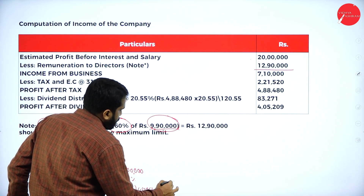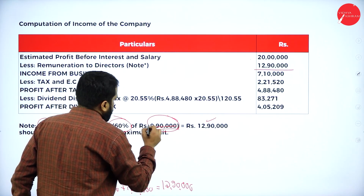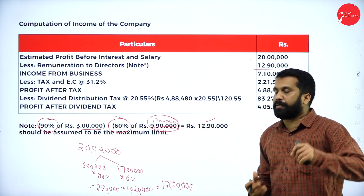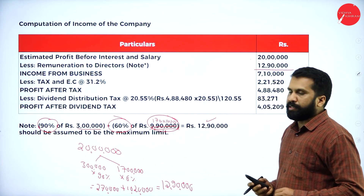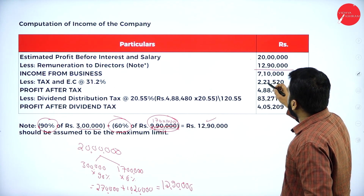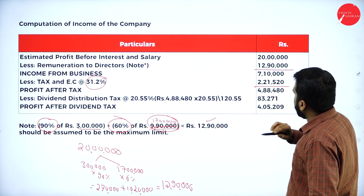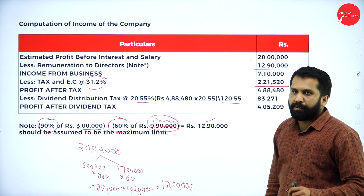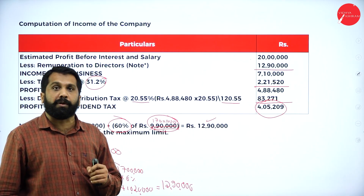We don't have remuneration here separately; both total 12 lakh 90,000. 60% of 17 lakh applies. Net taxable income: 7 lakh 10,000. Tax at 31.2% gives 2 lakh 21,000 minus 4 lakh 88,000. Calculate dividend distribution tax at 20.55%, divide by 120.55, you will get 83. Your final answer: 4 lakh 5,000.